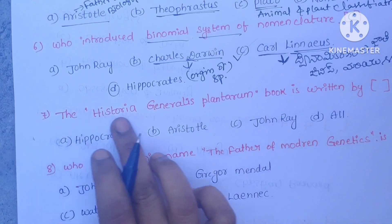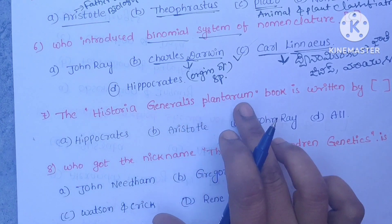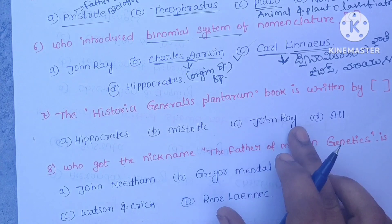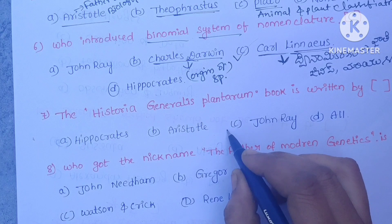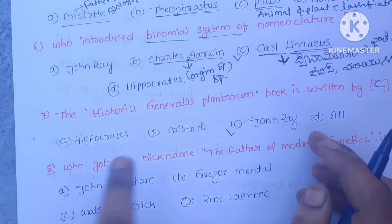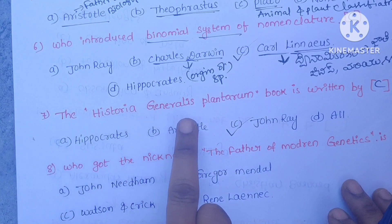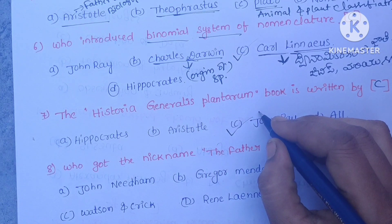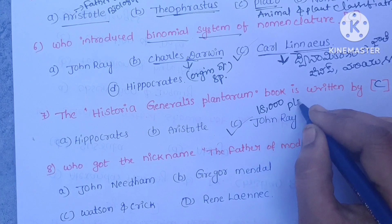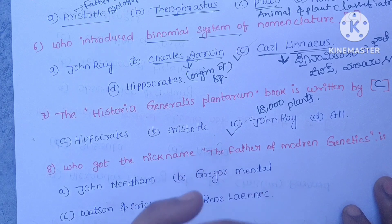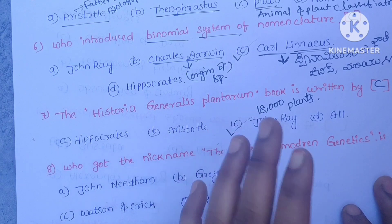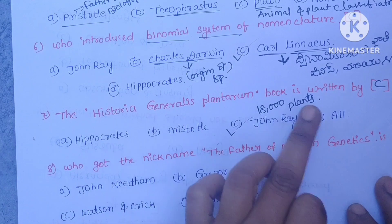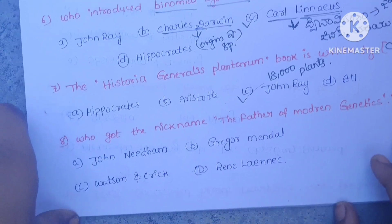The Historia Generalis Plantarum book was written by — A. Hippocrates, B. Aristotle, C. John Ray, D. Hall. The correct answer is C. John Ray. He wrote it in three volumes and identified and described 18,000 plants.